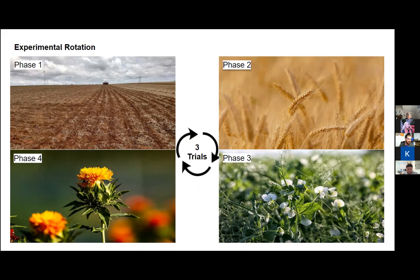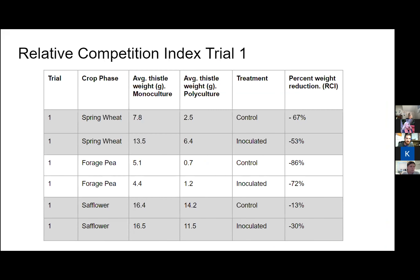After each phase, when we harvest, we allow the Canada thistle to regrow — because it's a perennial weed — then re-inoculate and plant the next crop. This rotational experiment will be done over three separate trials. We're using the relative competition index, which is concerned with the percent weight reduction between our control and our inoculated treatment. We assume that Canada thistle in a control setting will be more competitive than infected Canada thistle fighting for resources in a competitive system.